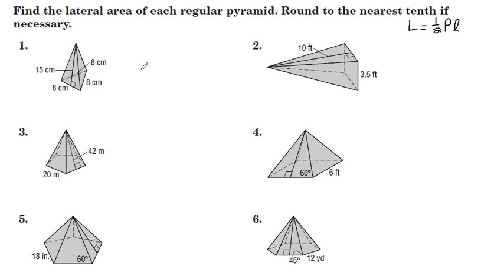For number 1, I have one half, 8, 8, and 8 is the perimeter of the base, makes 24. Slant height here is given 15. One half of 24 times 15 is 180 square centimeters.